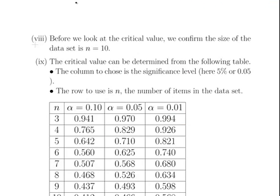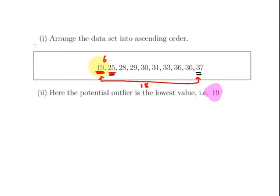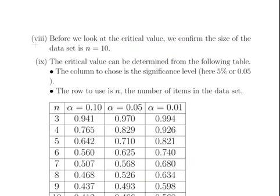Before we look at the critical values, we confirm that the size of the data set is N equals 10. There are 10 values there. You can just check that very quickly. You might not be told it, but you can just check there: 1, 2, 3, 4, 5, 6, 7, 8, 9, 10. So you just count them off like that. There are 10 values there. N equals 10.